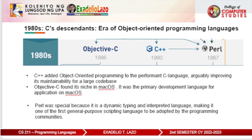Another language developed in this era is Objective-C, which found its niche in macOS. It was the primary development language for applications on macOS. Since iOS was released in 2007, it was also the primary language to develop iOS apps. The language Swift was released in 2014 as a replacement.